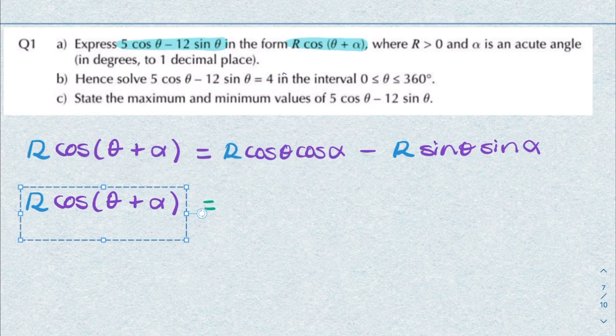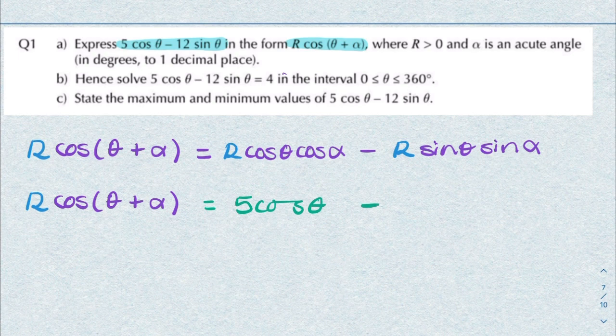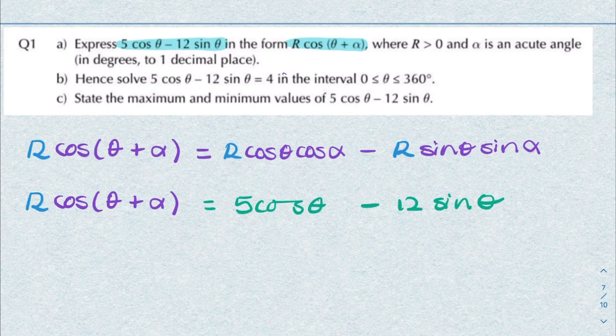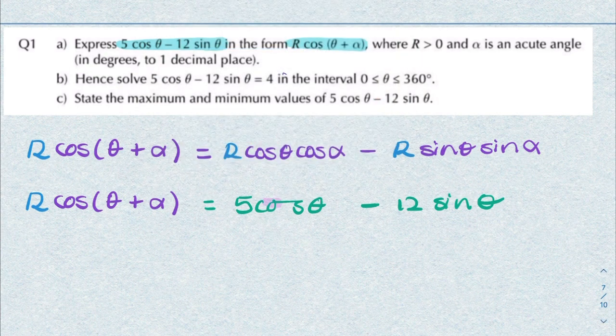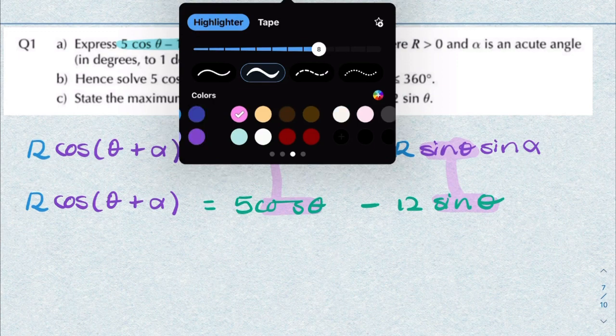What we want equals 5 cosine theta minus 12 sine theta. The trick here is to recognize that this cosine is the same as this cosine, and this sine corresponds to this sine, meaning that